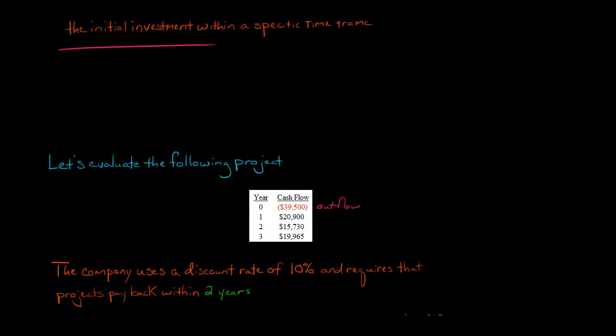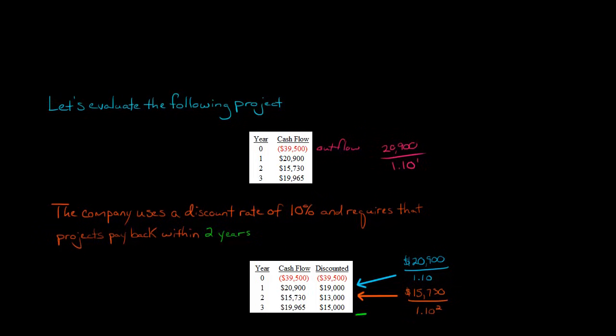So basically we're going to take $20,900 and we're going to discount it. You could use the formula for the present value of a single cash flow. So it would be one plus R, which is 10%, to the first power. And then you would discount $15,730 by dividing by 1.10 to the second power and so forth.